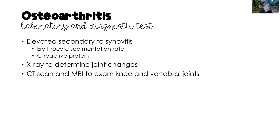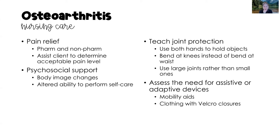We can also look at X-rays to determine any joint changes that have occurred, and then CT scans and MRIs can examine in particular the knees and the vertebral joints, looking for damage from osteoarthritis.